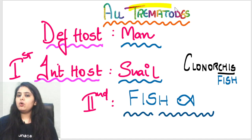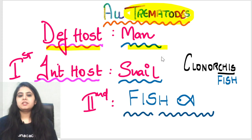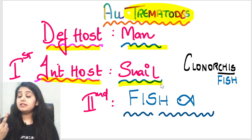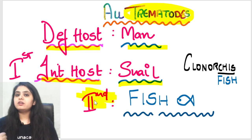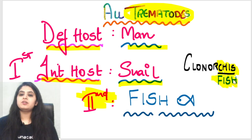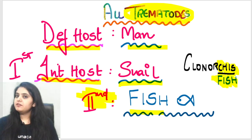When we were studying Paragonimus, I told you that for all the trematodes, the definitive host always remains the same — that is man. The first intermediate host always remains the same — that is snail. But for Paragonimus westermani, the second intermediate host was crab or crayfish. Here for Clonorchis sinensis, we'll remember it as Clonorfish, so the second intermediate host is going to be a fish.